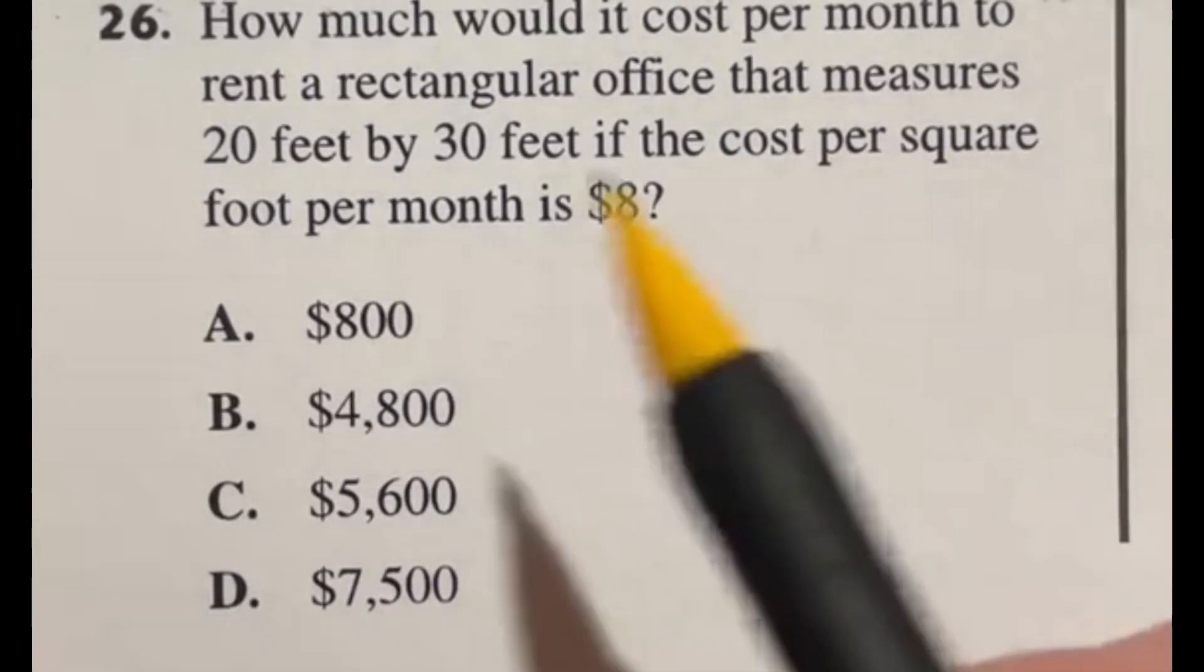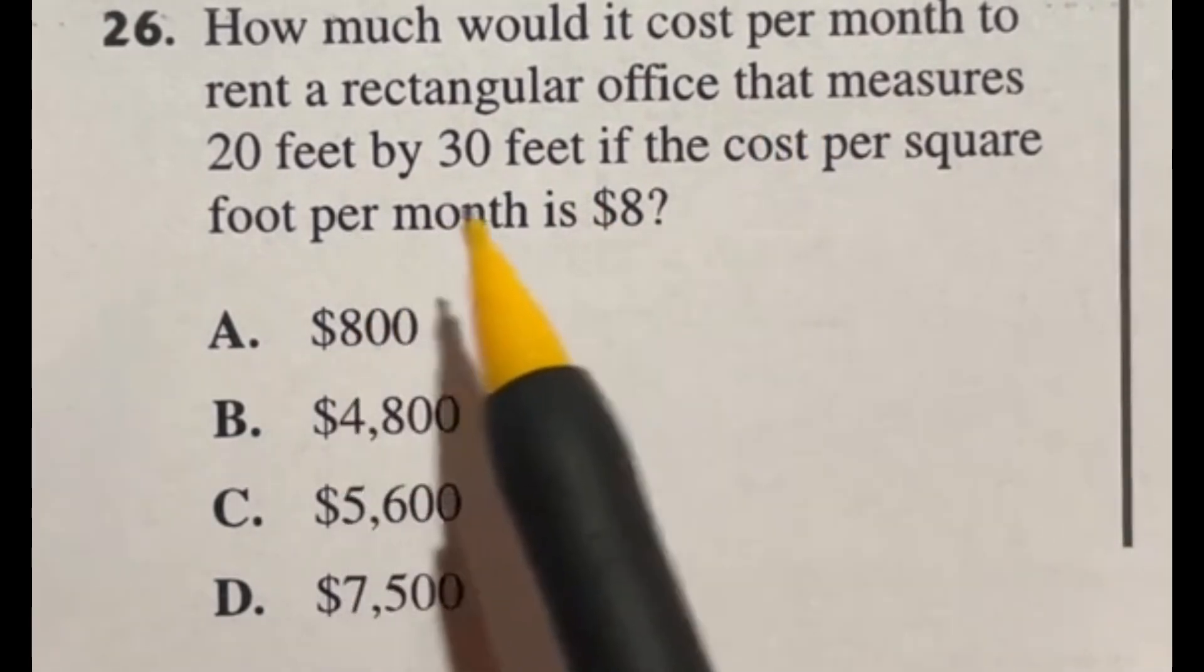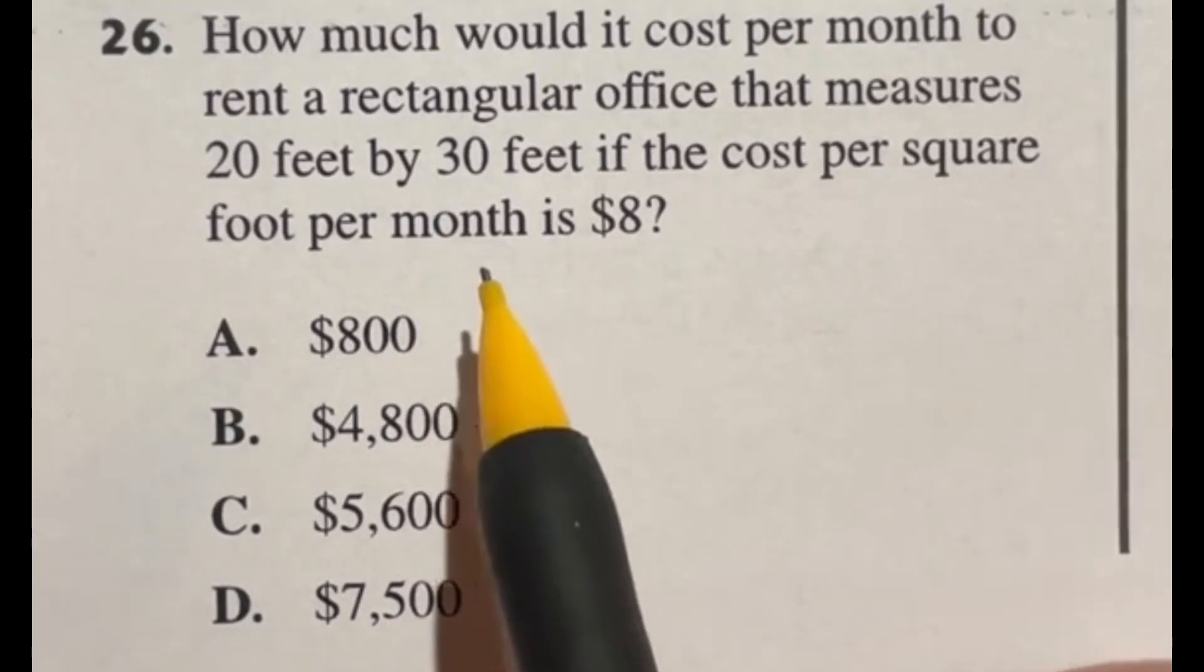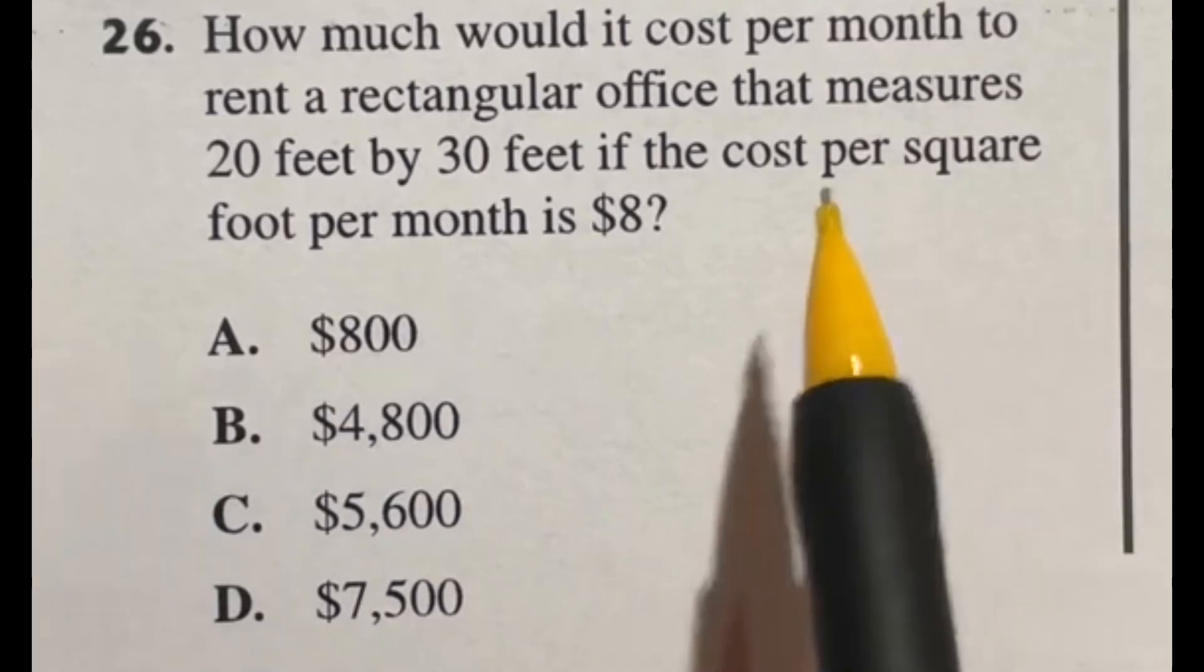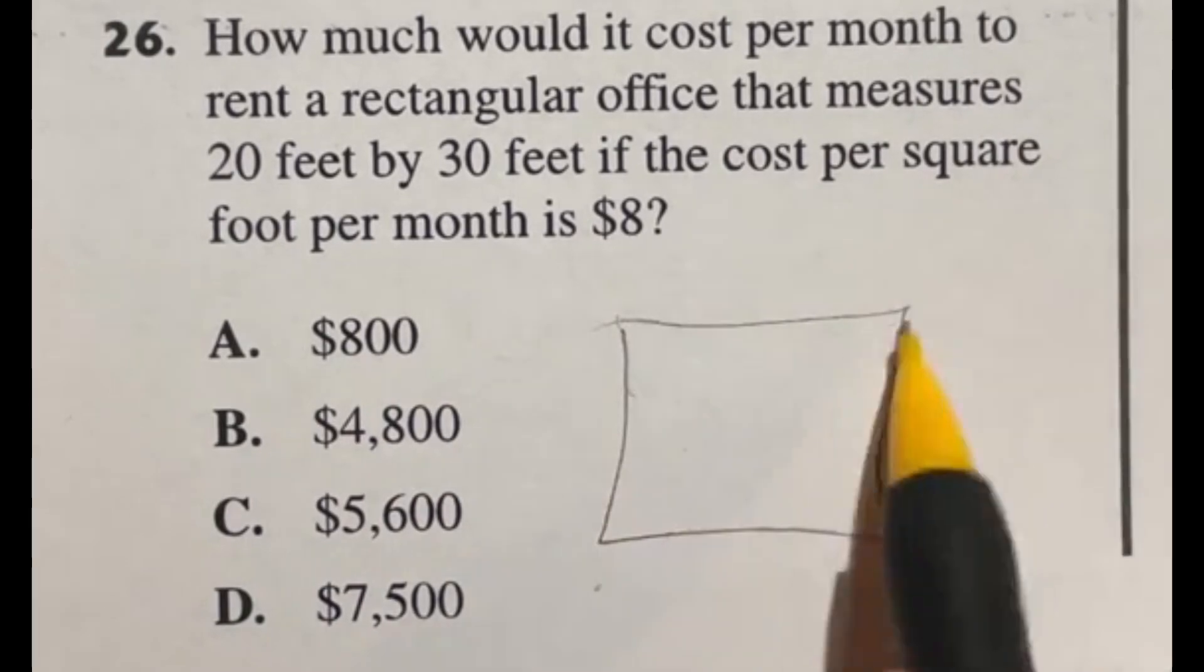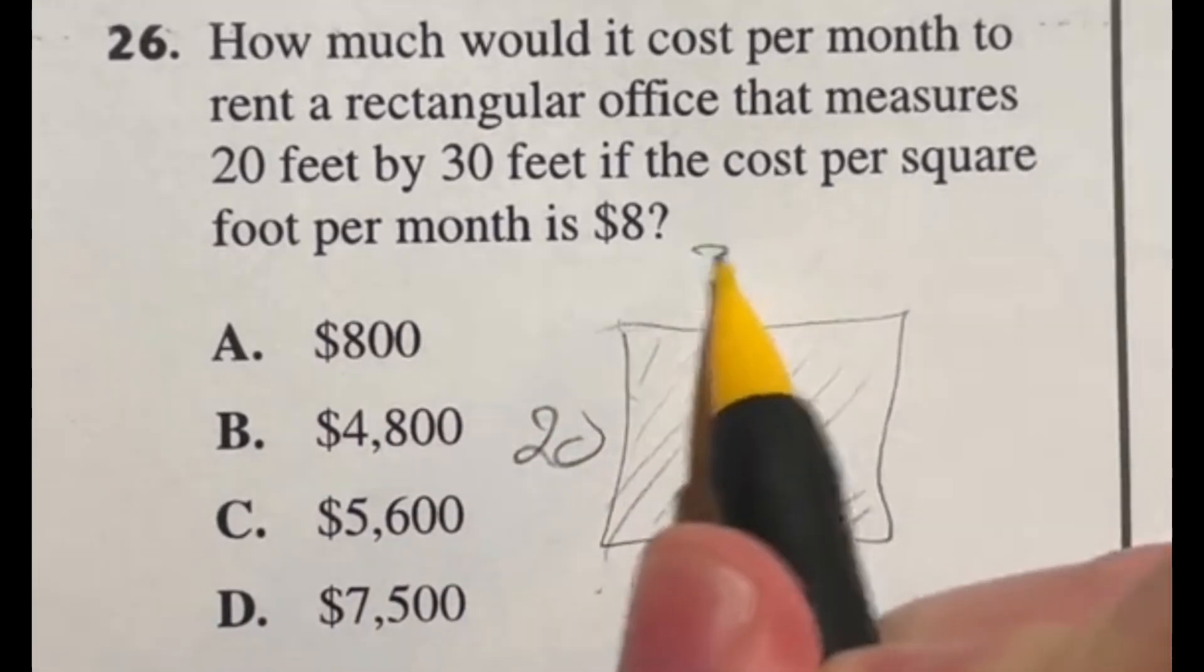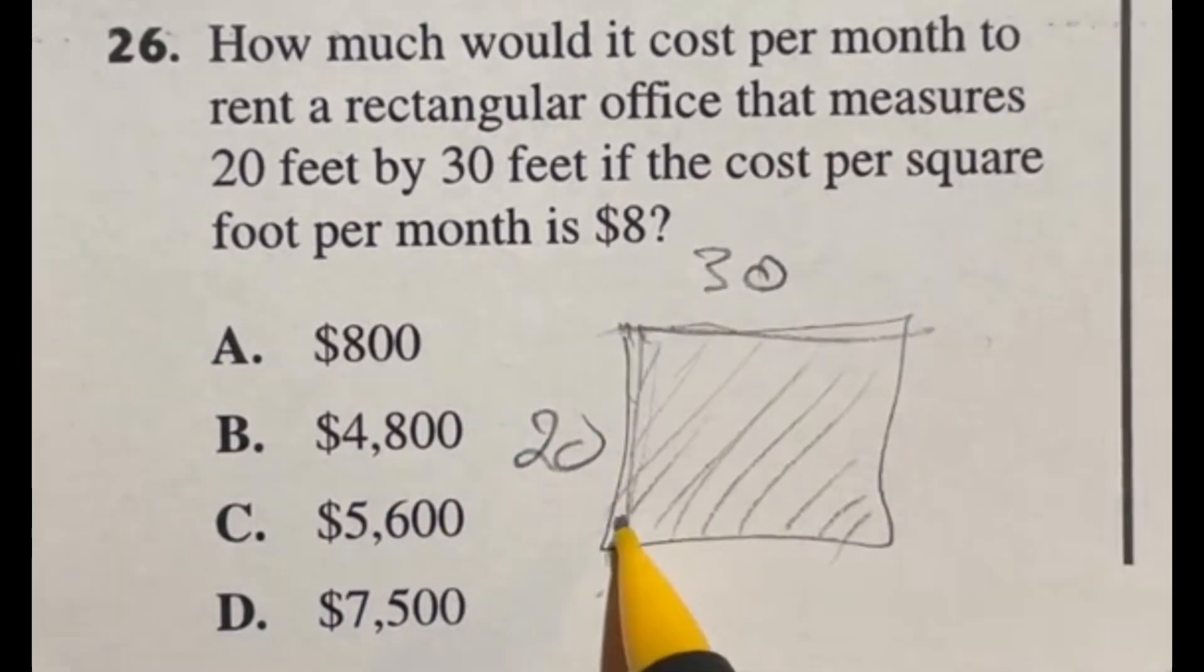Number 26. How much would it cost per month to rent a rectangular office that measures 20 by 30 feet if the cost per square foot per month is $8? In this case we're finally moving away from perimeter questions and into area questions. This is a little bit different because we're no longer looking around the outside. We're looking at the area that fills up this rectangle, which is 20 by 30 feet.